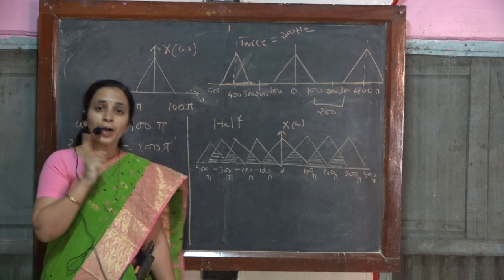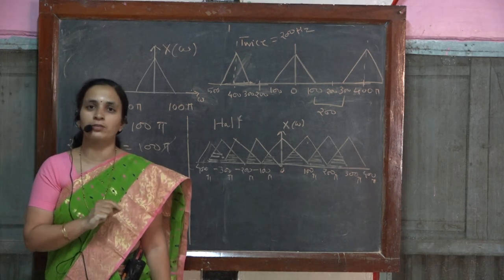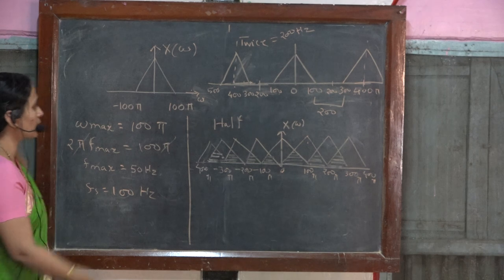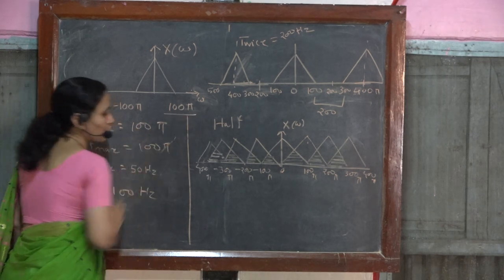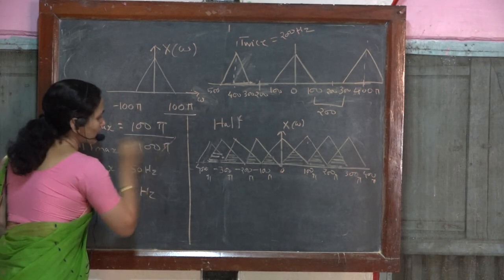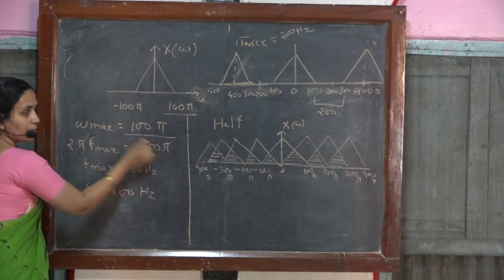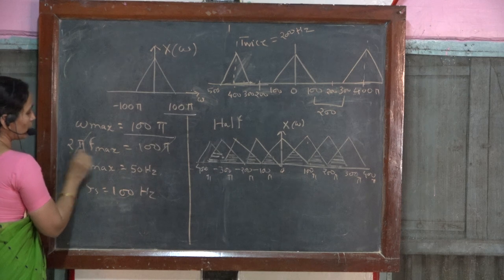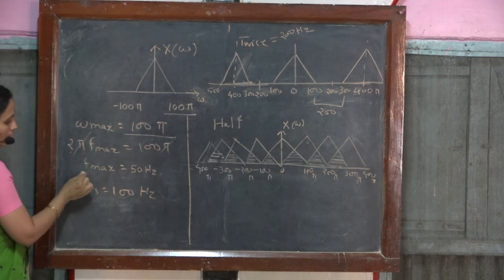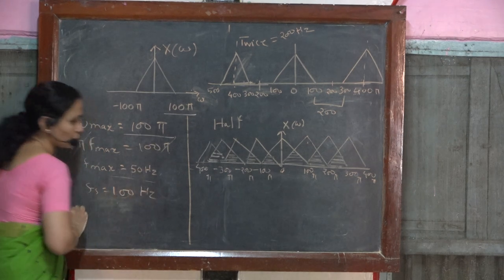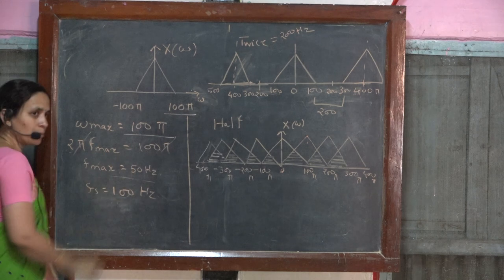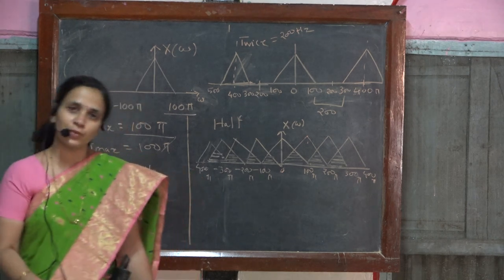Now the first job we are going to carry out is to find out the Nyquist rate. To find the Nyquist rate, let us find out the maximum frequency present. The maximum frequency present is this one, so 2πf_max is 100π, which cancels out, and what remains is 2f_max equals 100, hence f_max equals 50 hertz. So the maximum frequency available in my signal is 50 hertz.